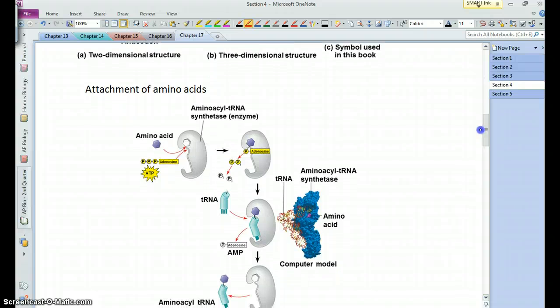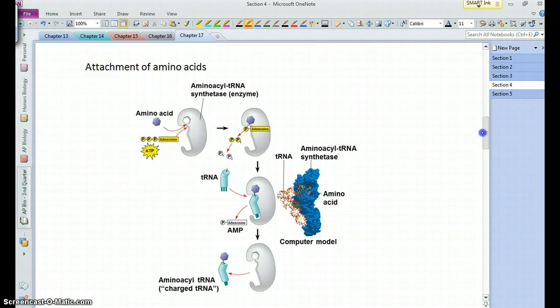The amino acids, this is how they're attached to the tRNAs. There's this enzyme, aminoacyl tRNA synthetase. It essentially grabs onto the amino acid, it grabs onto the tRNA, and with some energy provided by ATP, it's able to bond that amino acid onto that tRNA.